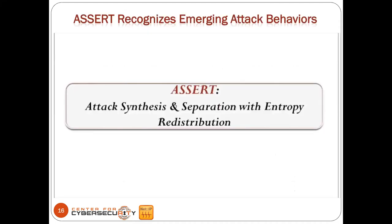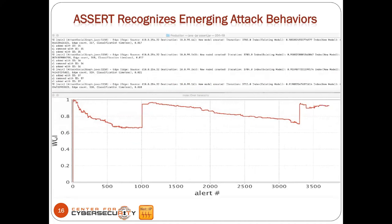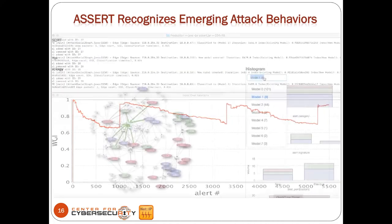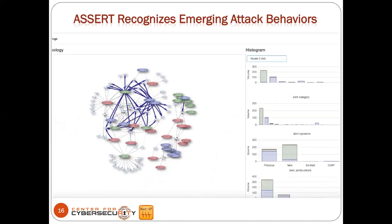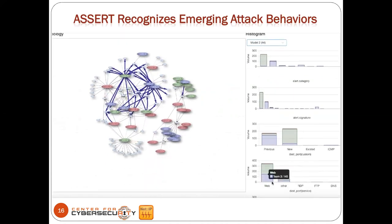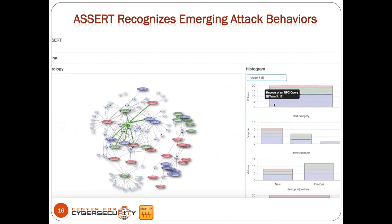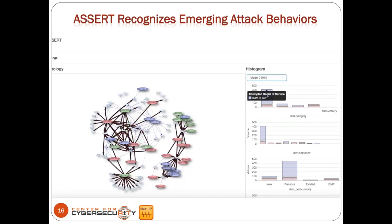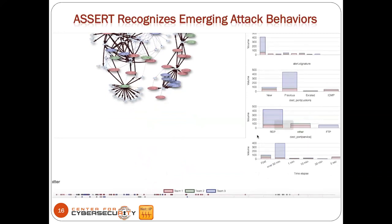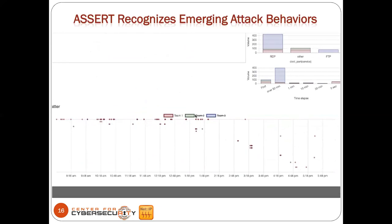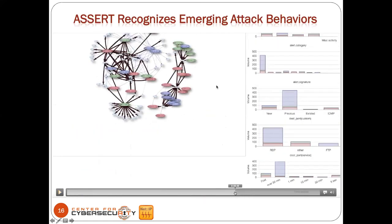I'm going to show another video of how Assert works. We're looking at a WTI index to see how performance evolves over time. These are results from one run showing the different models — for example, model 2 with 44 collections of alerts — giving different attribute values to understand different feature values, signatures, and distributions. You can customize the features and look at different teams. The timeline is very important here.